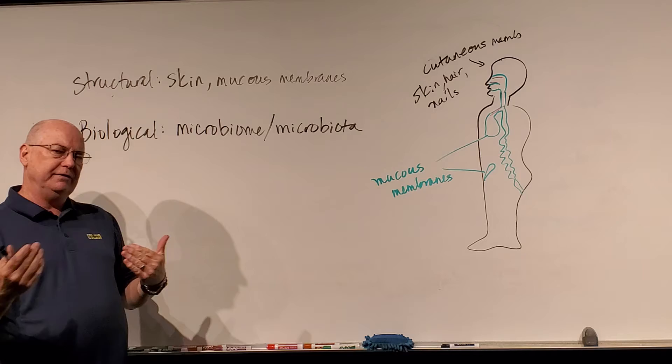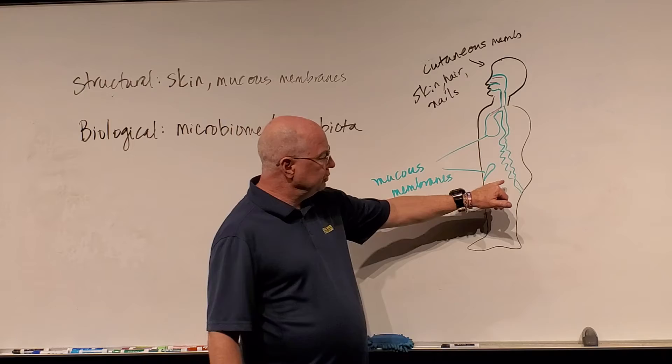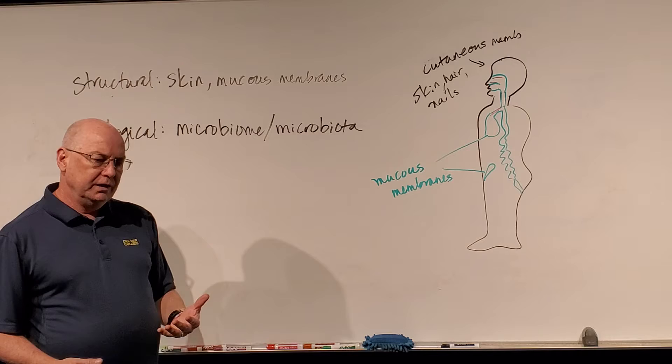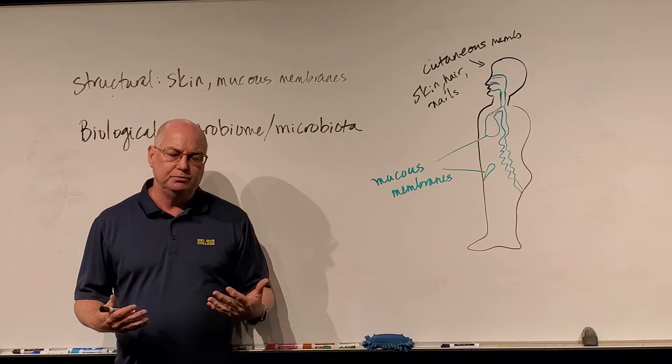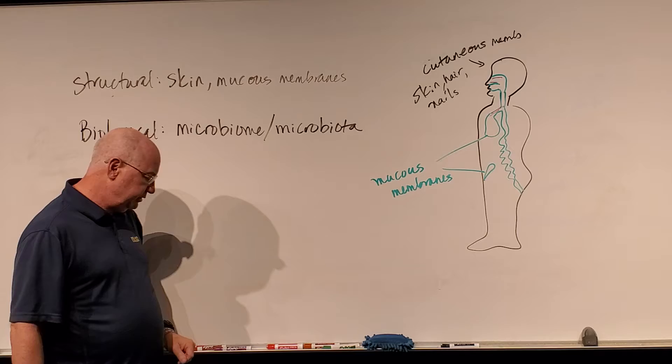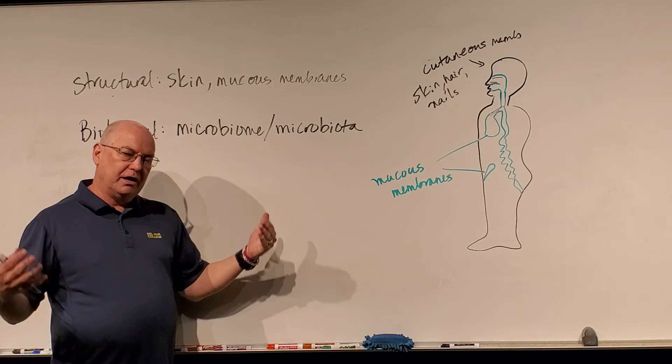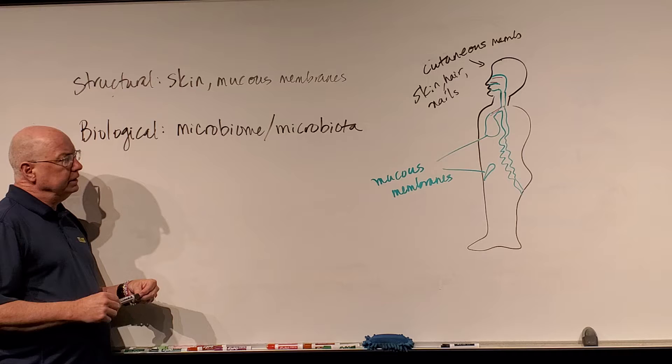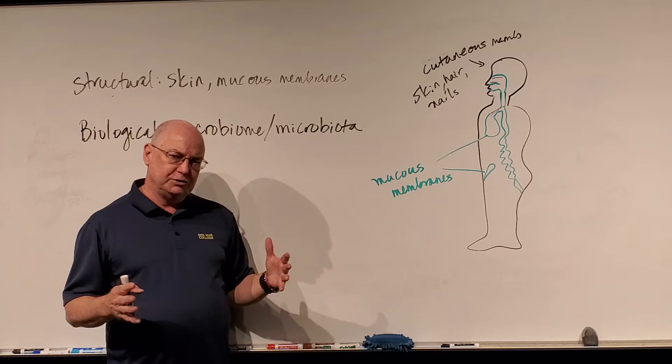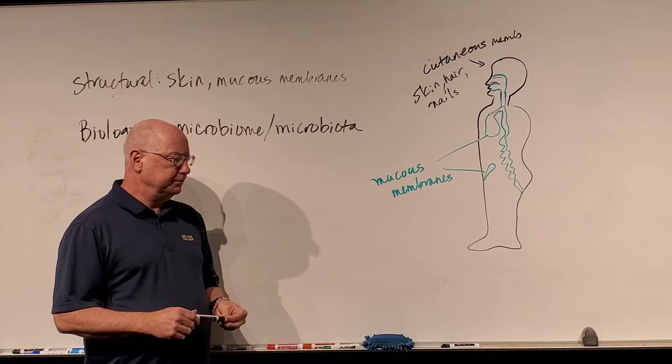Our normal flora do a number of things to prevent infectious agents or pathogens from penetrating the body. Some of these internal passageways have bacteria there — some normal flora. One of the things those bacteria do is make that environment inhospitable to pathogens. For example, Lactobacillus in part of our gut and the vagina can make it very acidic, and a lot of microbes don't grow well in an acidic environment.